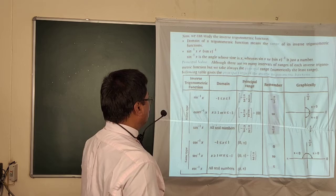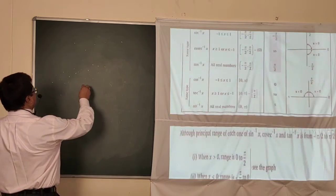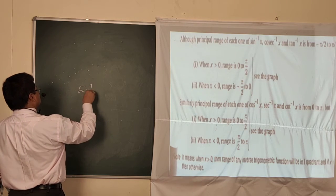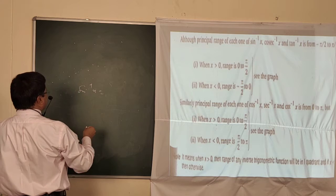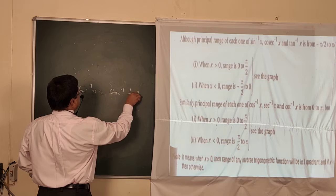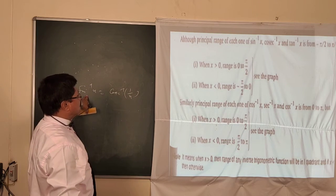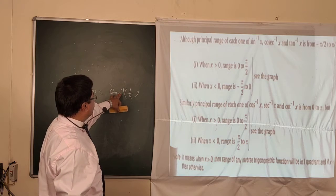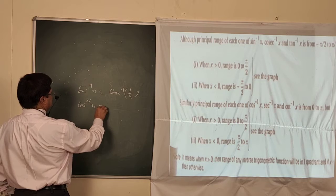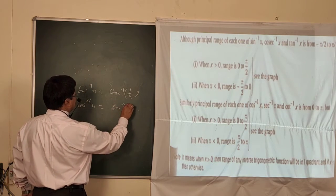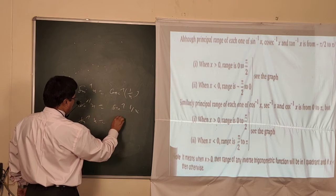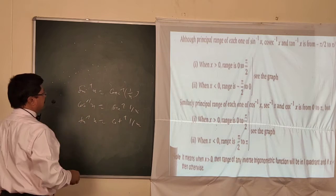Now some relations: sin inverse x equals cosec inverse (1/x). If you want to convert to cosec, sin⁻¹x = cosec⁻¹(1/x). Similarly, cos⁻¹x equals sec⁻¹(1/x), and tan⁻¹x equals cot⁻¹(1/x). The other ratios can be changed similarly.